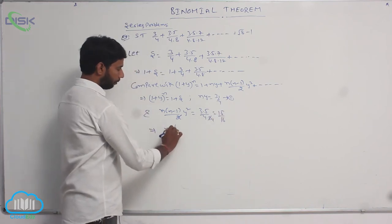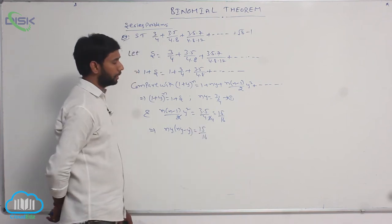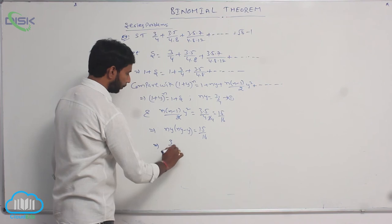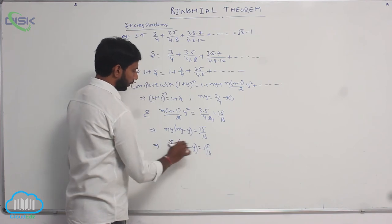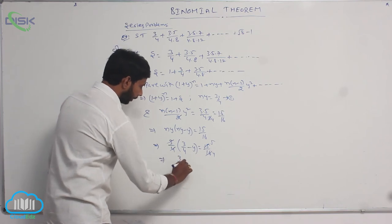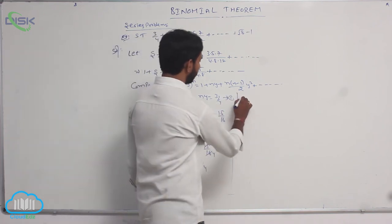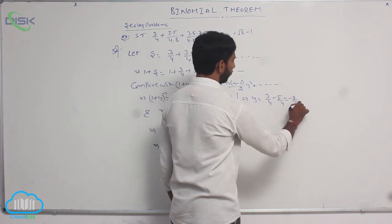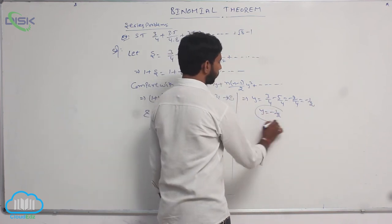It can be written as ny(ny − y) = 15/16. Substituting the value of ny = 3/4: (3/4)(3/4 − y) = 15/16. After cancellation, 3/4 − y = 5/4, which gives y = 3/4 − 5/4 = −2/4 = −1/2. Therefore, the value of y is −1/2.